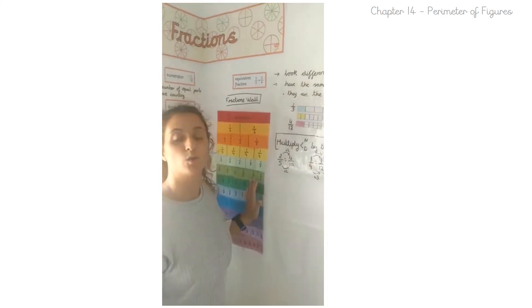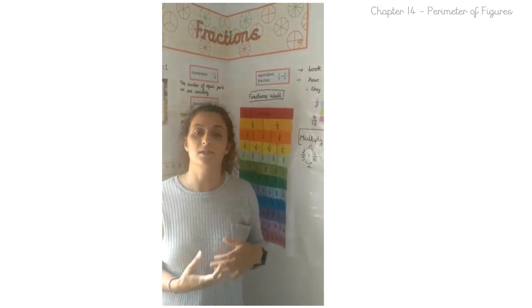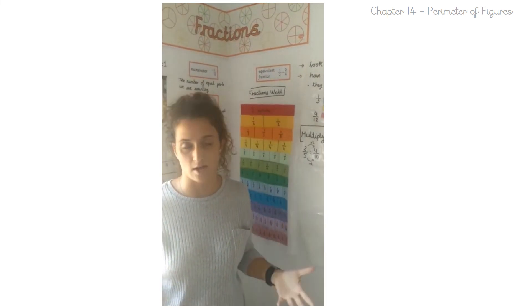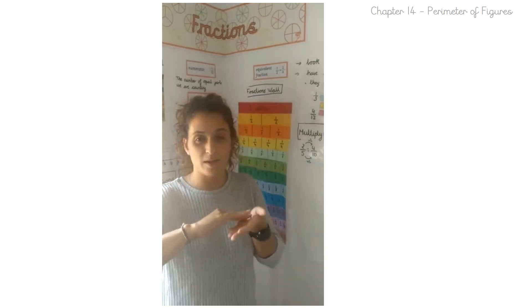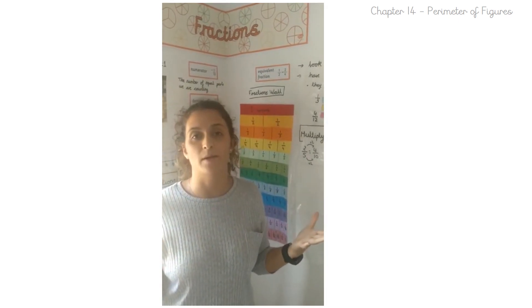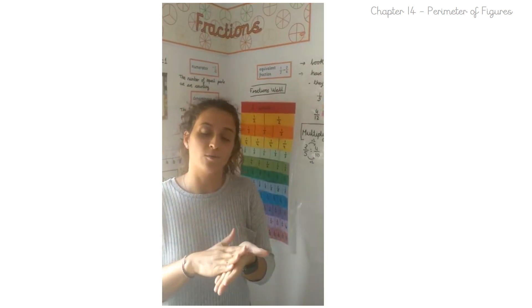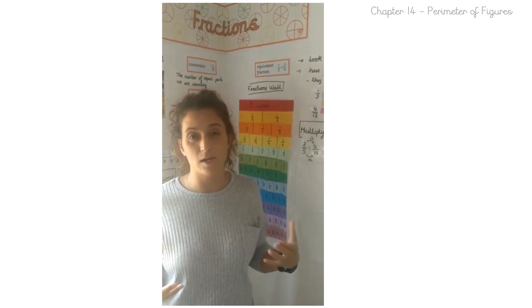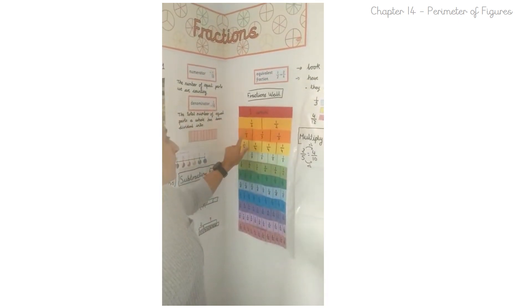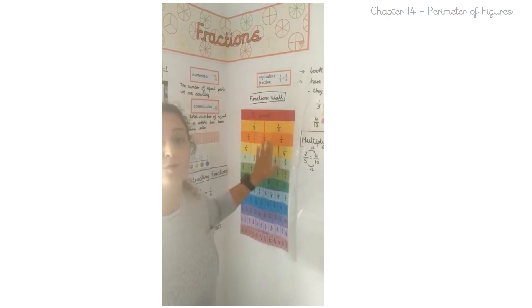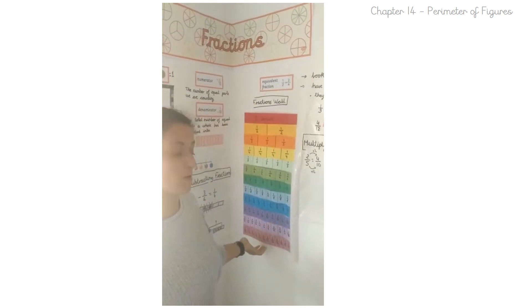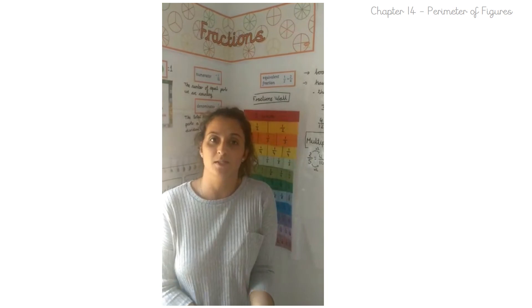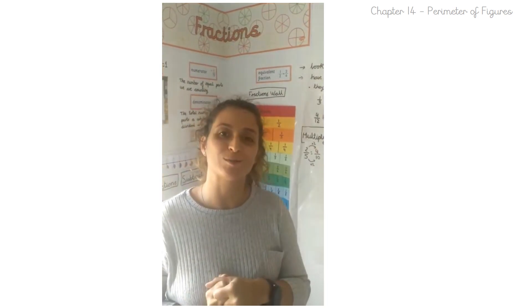Your task is to make a fraction wall and try to write as many equivalent fractions as you can. If you find it tricky folding the paper into one, two, three, four, five pieces, you could also go for even numbers only — one whole, two parts, four parts, six parts, eight parts. But it would be really good if you give it a go dividing the whole into three, five, or six parts. You do not need to go up to twelve if you don't want to — just see how big you can make your fraction wall. Have fun doing this, and if you have any doubts, please message me or Miss Downing. We'll see you tomorrow. Bye.